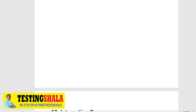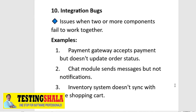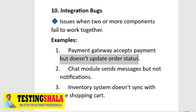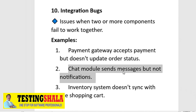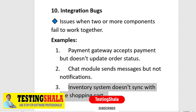The tenth type is integration bugs — when two or more components fail to work together. Examples include: a payment gateway accepts payment but does not update the order status, a chat module sends messages but no notification is triggered, or an inventory system does not sync with the shopping cart. These should all be logged as integration bugs.